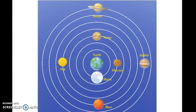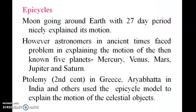This is the solar system. The moon goes around the Earth in 27 days — its motion is nicely explained. However, astronomers in ancient times faced problems in explaining the motion of the five planets: Mercury, Venus, and others.